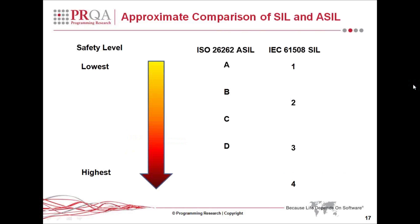For IEC 61508 we had Safety Integrity Levels, SIL Levels 1 through 4. For ISO 26262, intentionally different, they've called them the ASIL Levels — Automotive Safety Integrity Levels — and these are lettered A through D, where A is the lowest and D is the highest. There's no direct comparison between ASIL Levels and SIL Levels because they are different standards. Some people say ASIL D can be compared to IEC 61508 SIL Level 3, but there's no direct comparison — you can't say that having one means you have the other. These need to be done and certified separately.